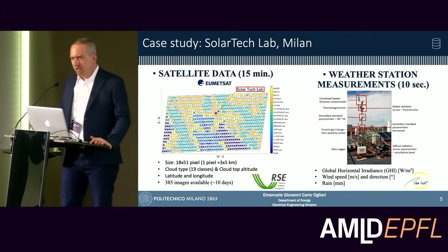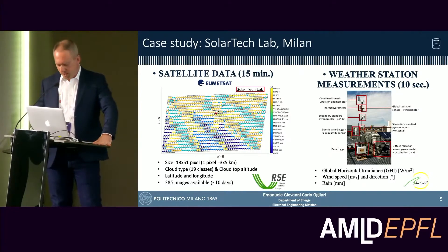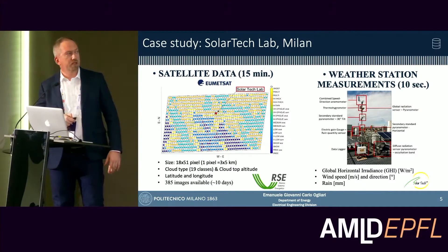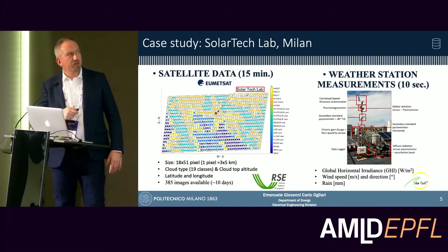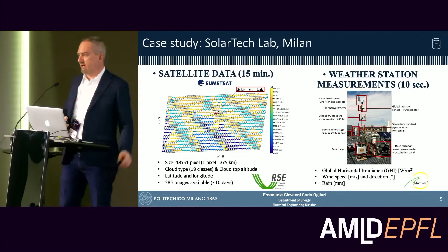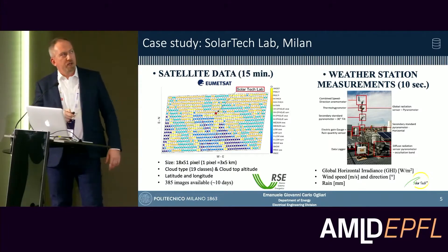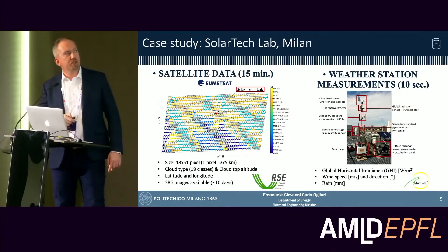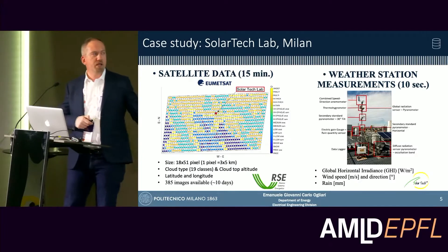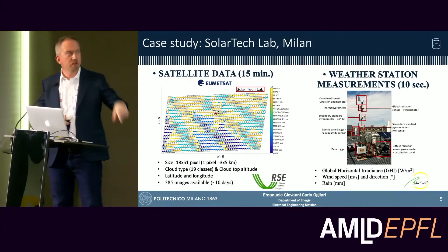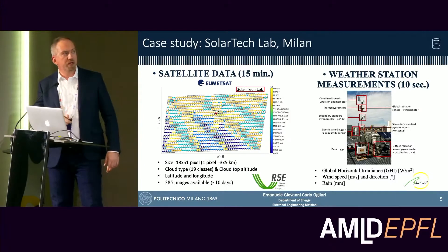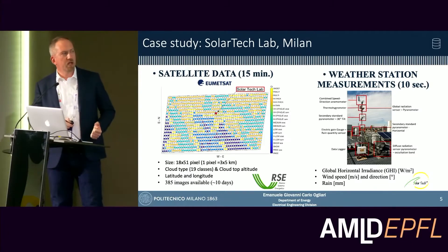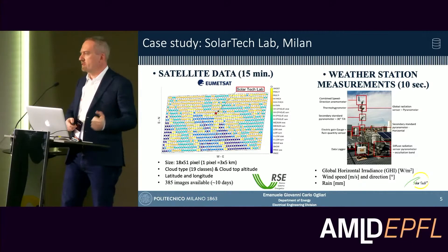The case study is our Solar Tech Lab in Milano. The satellite picture is 18 by 51 pixels, with the Solar Tech Lab location highlighted by a red star. The satellite provides this picture every 15 minutes, and each pixel covers a surface of 3 by 5 km. We also have a preliminary classification of 19 cloud typologies, and cloud top altitude is provided by the weather service.